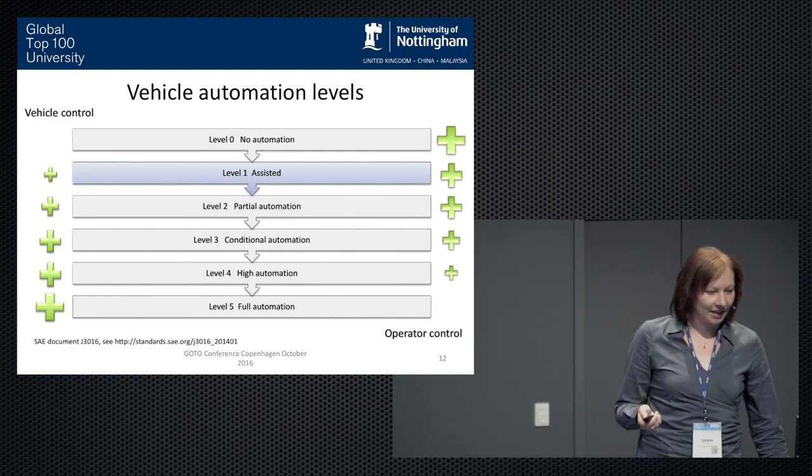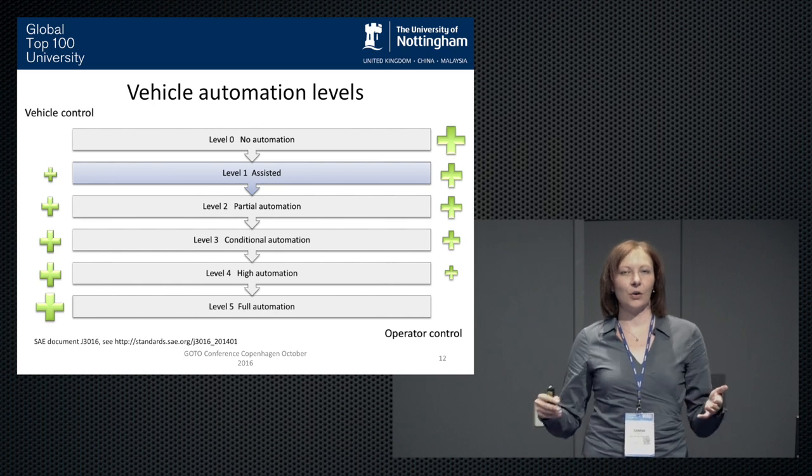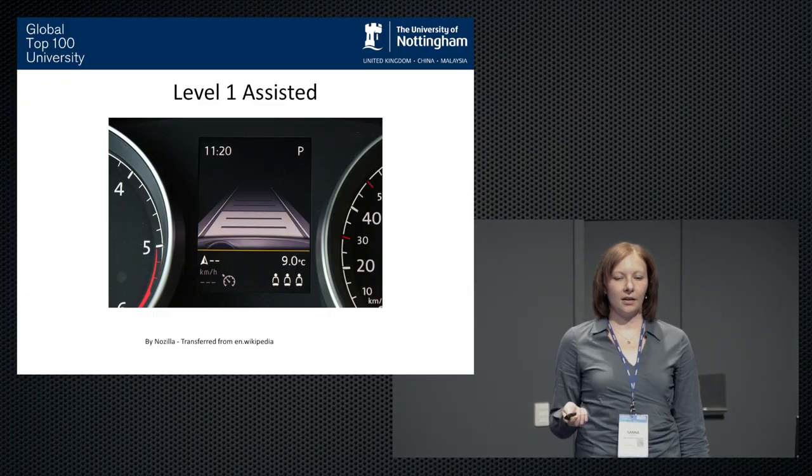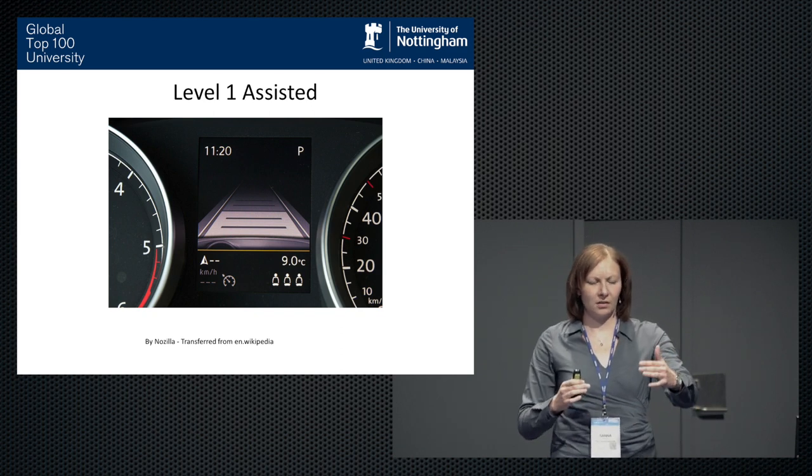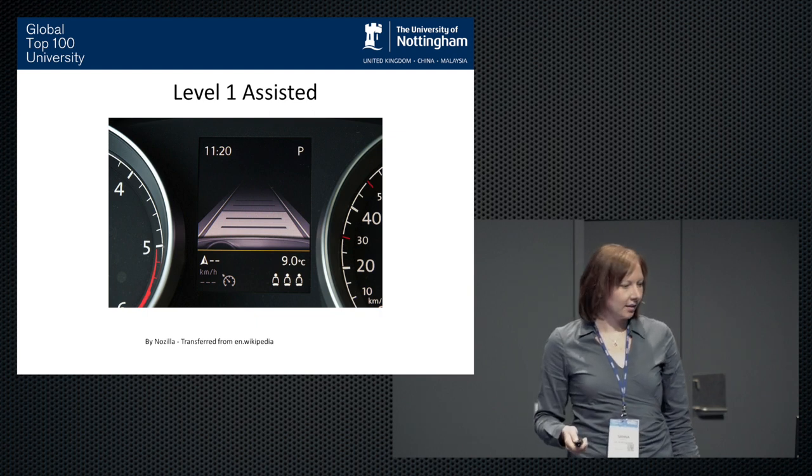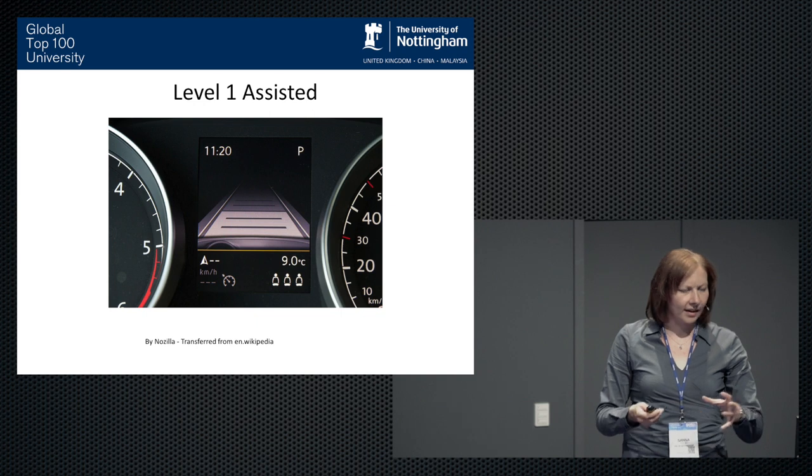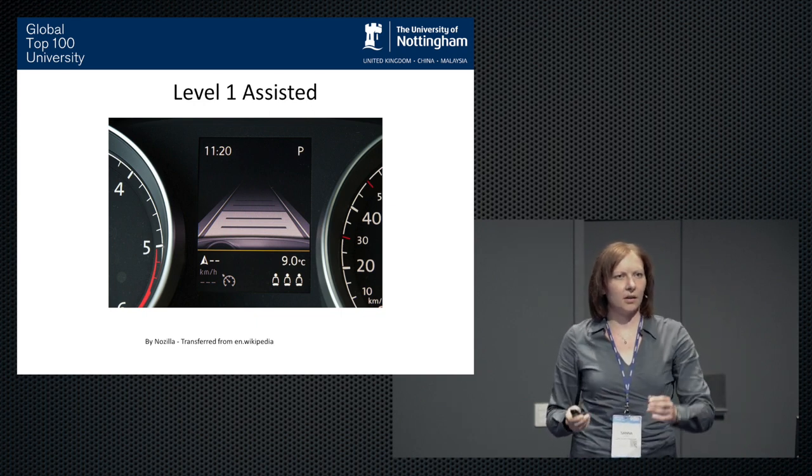Level one is assisted automation. That means that the driver must be ready to take control at all times and monitor the driving environment continuously. Such systems include cruise control and adaptive cruise control, where the car is, at least in certain conditions, able to do the longitudinal control or the lateral control, where the car is staying within the lane. It can also include parking assistance or some combination of these systems. One example, this is a picture from a Volkswagen Golf. It is an adaptive cruise control system where the car is following a car in front at about a constant distance. Other examples are park assists and simple stop-and-go assists at very low speeds on the motorway or in traffic jams.